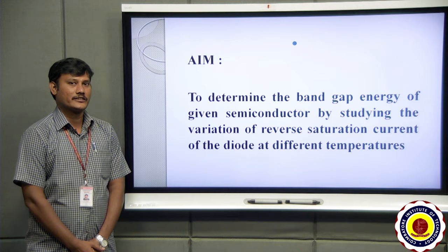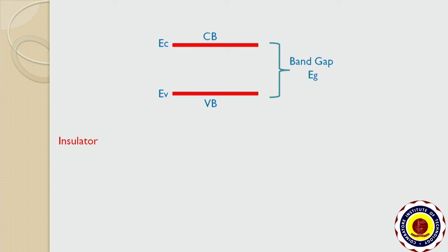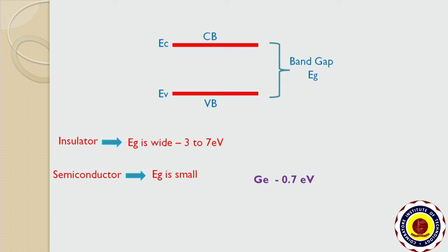The region between the highest level of the completely filled band called the valence band and the lowest level of the allowed empty band called the conduction band is called the energy gap, denoted by Eg. In the case of insulators, the energy gap is very wide, about 3 to 7 electron volts. In case of semiconductors, this band gap energy is quite small — for example, germanium has 0.7 eV and silicon has 1.1 eV.